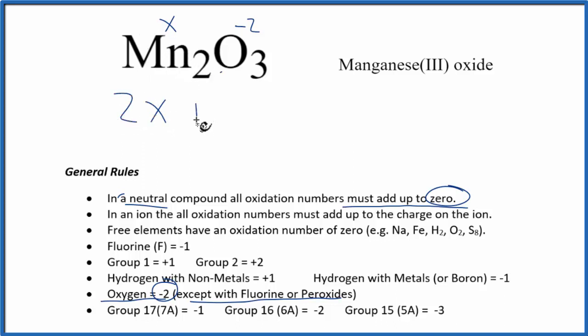Plus, we have the three oxygens, and each one has a minus 2 oxidation number. They all add up to zero. So 2X minus 6 equals zero. Subtract 6 from each side. 2X equals 6.